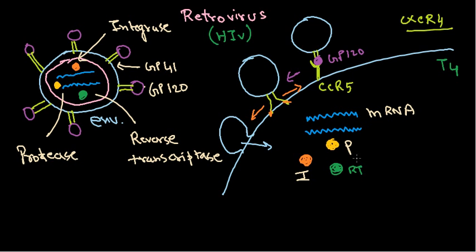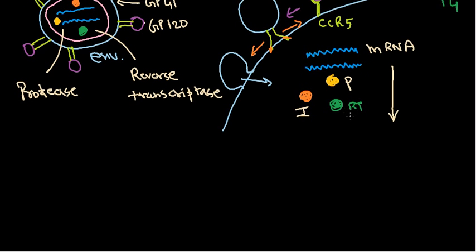Since the virus only has RNA in hand, it needs to produce DNA from the RNA, because it needs to integrate into the host cell genome — and the host genome is DNA, not RNA. They must convert their RNA into DNA through the process of reverse transcription, which requires the enzyme reverse transcriptase. The virus takes the RNA as a template to produce the first strand of DNA.